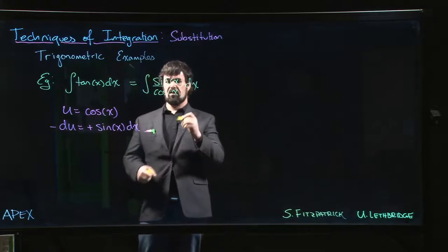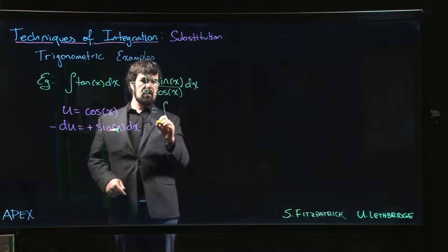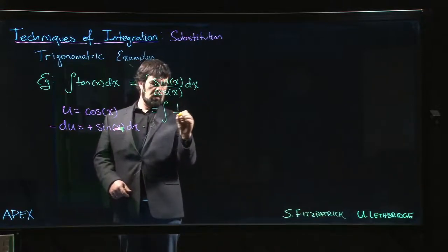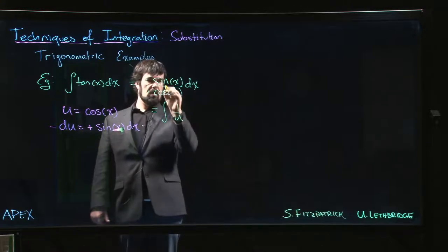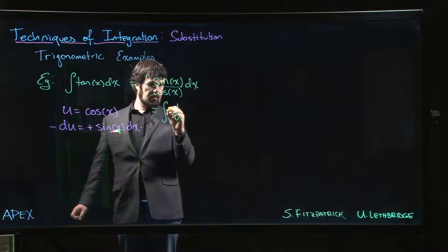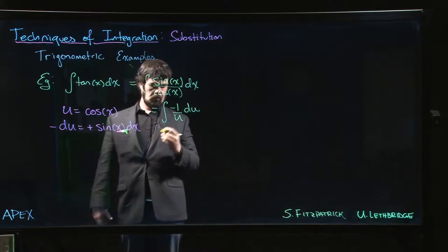Now we can come over here and we can say that this is going to be the integral of 1 over cos becomes 1 over u. Sine x dx becomes negative du. So let's put the minus there. Minus 1 over u times du.